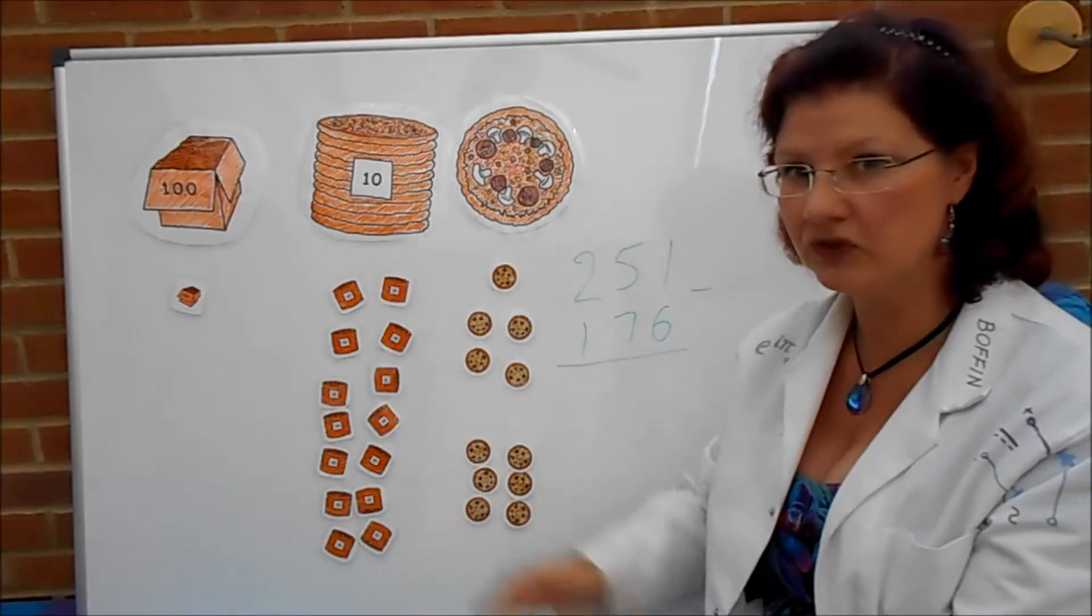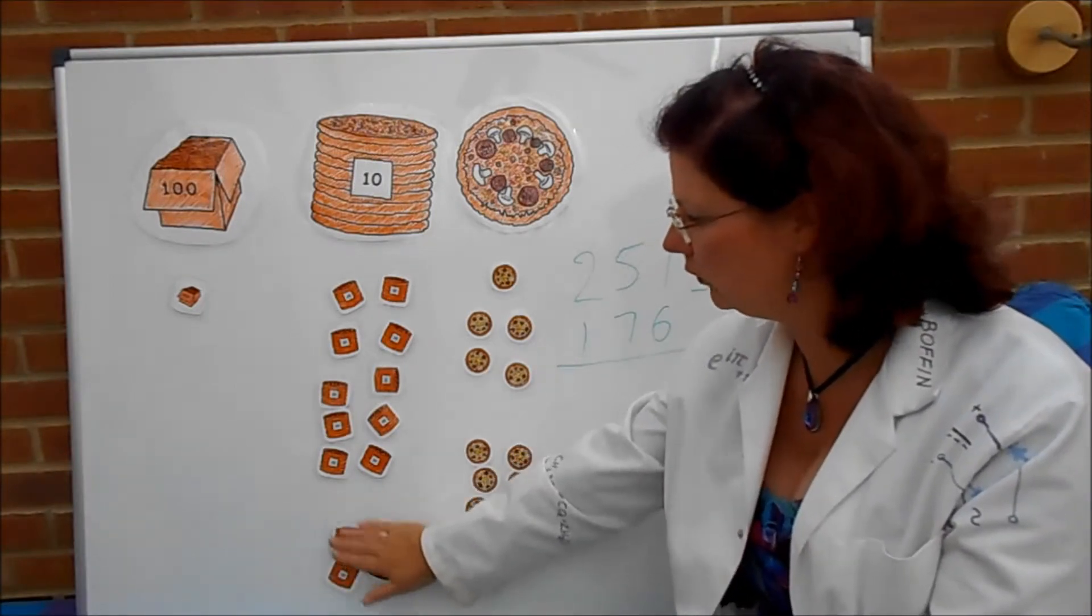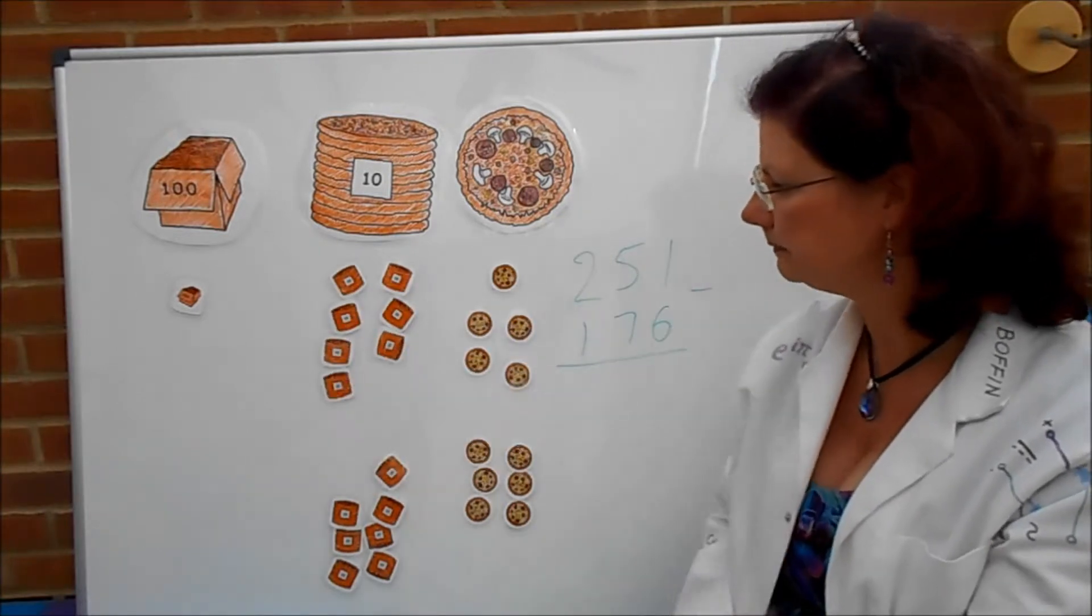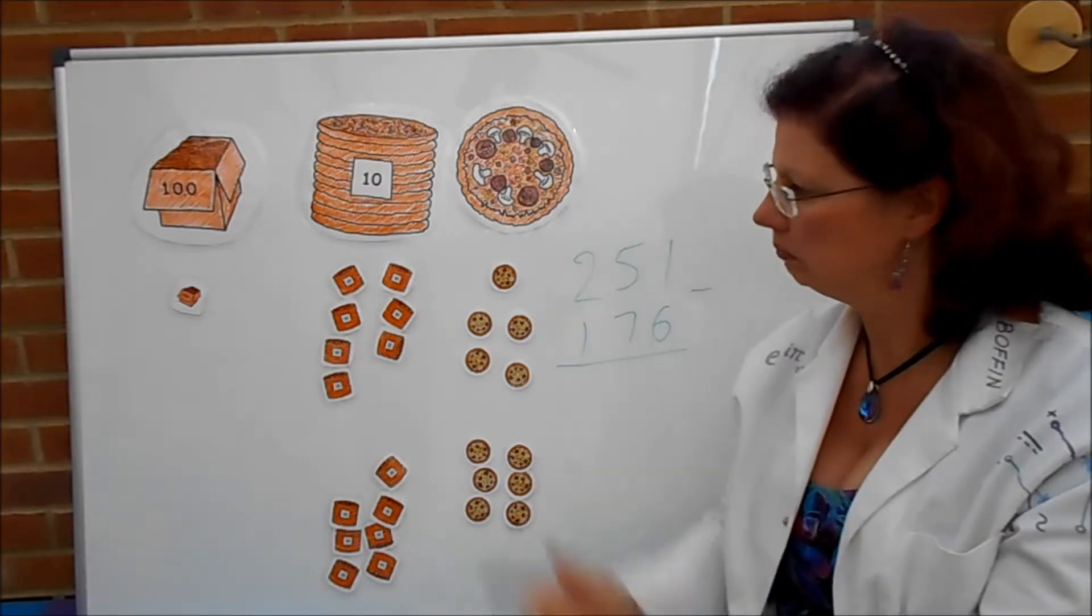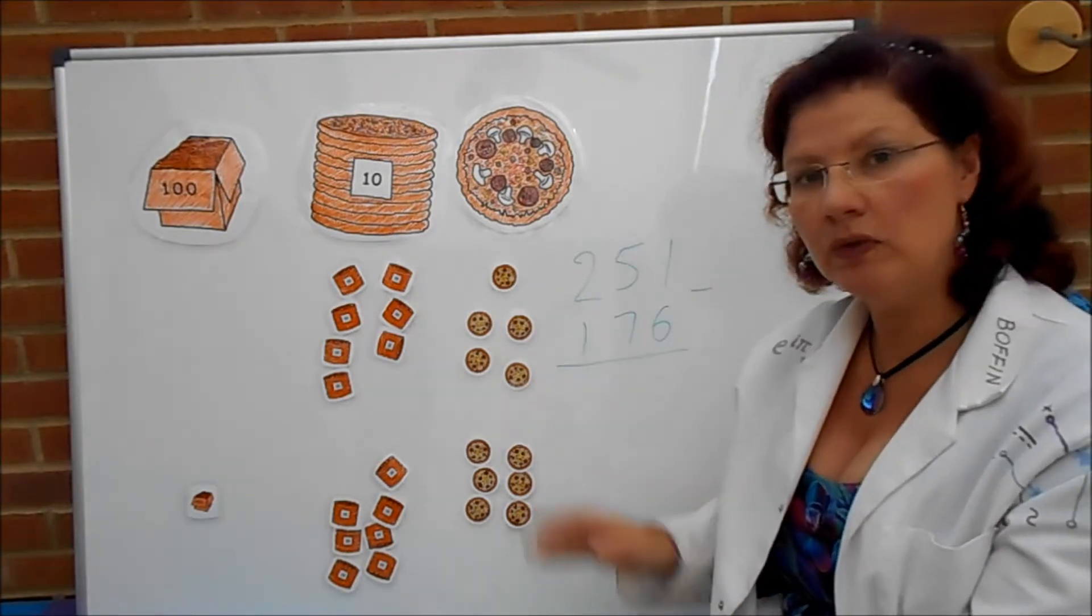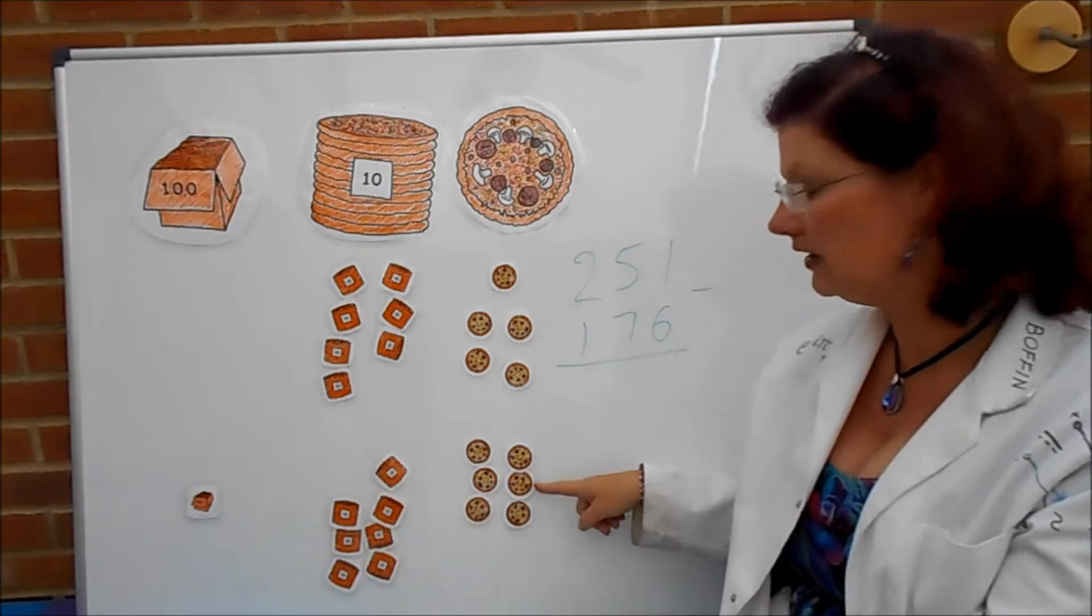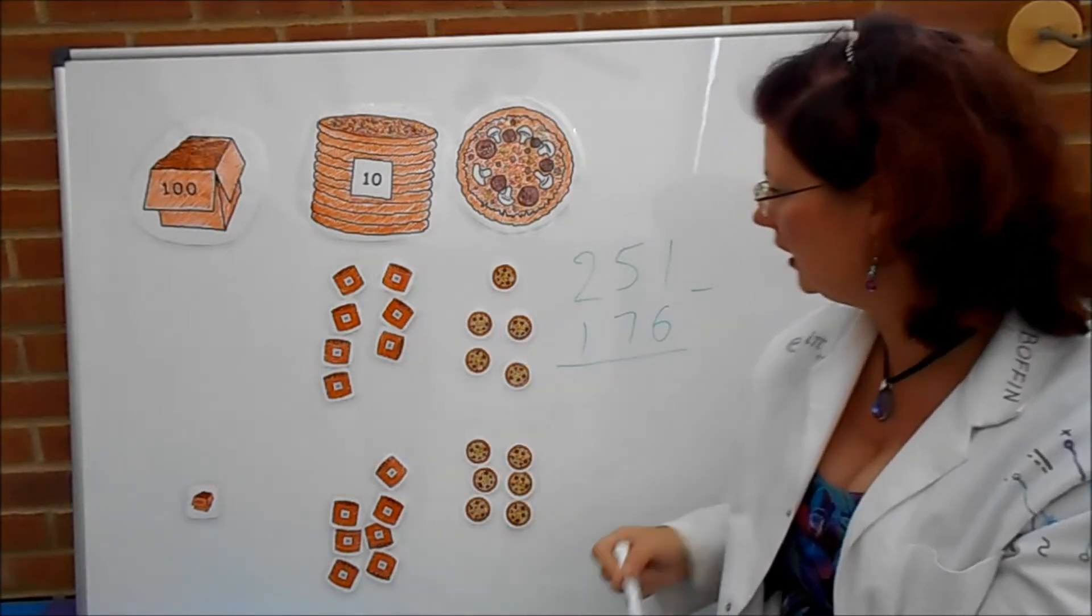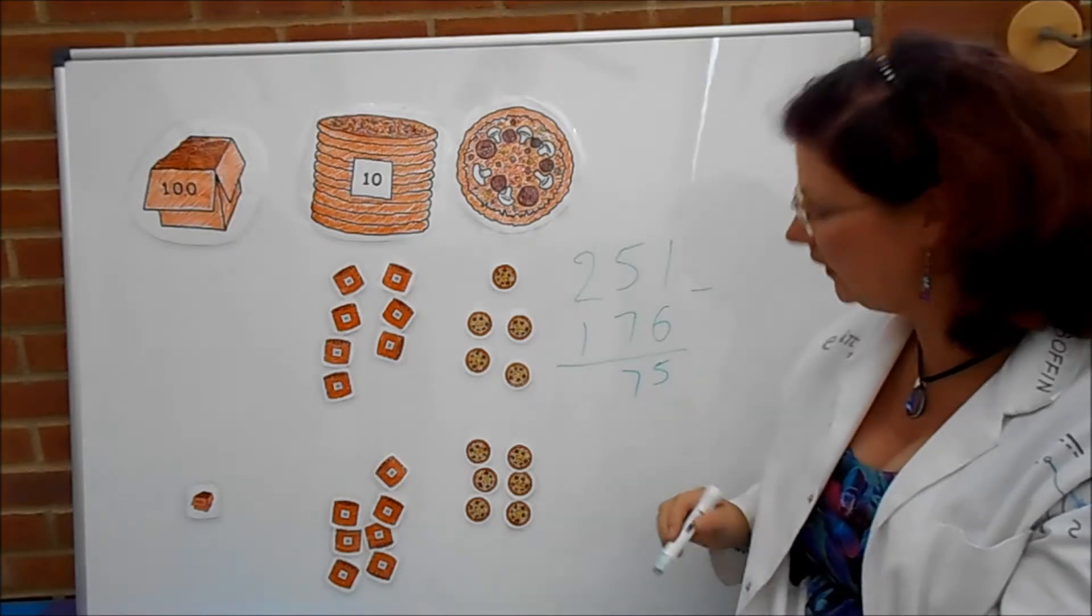So now we've got quite a lot of stacks of 10 here. And your customer wants seven of them. Sure, that's fine. So two, four, six, seven. And these are the ones you've still got on your shelves now. And finally, your customer wants one box of 100. It's fine. You've got a box of 100, so you give it to him there. So 251 pizzas altogether. Your customer has 176 of them. And what have you got left? You've got 70 and here is five of them. 75 is the answer.